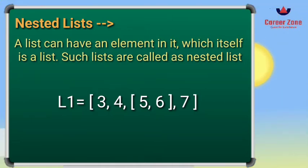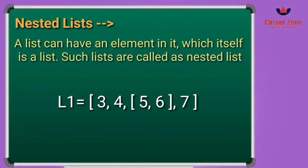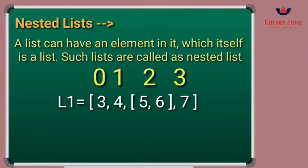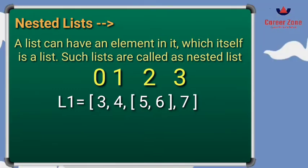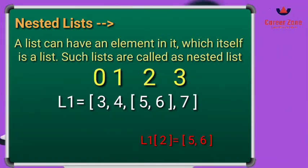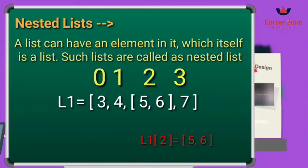Here I have defined a list which contains four elements: the number 3, then 4, then a list-type element containing 5 and 6, and the number 7. The indexing goes 0, 1, 2, 3. The element at index 2 is [5, 6], so if you write print(l1[2]) it will give you the output 5, 6.